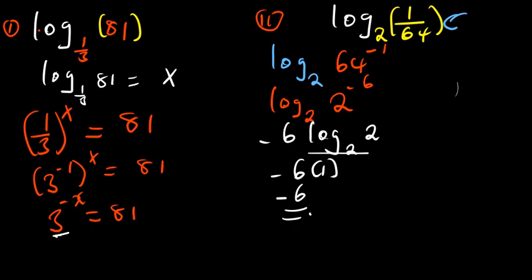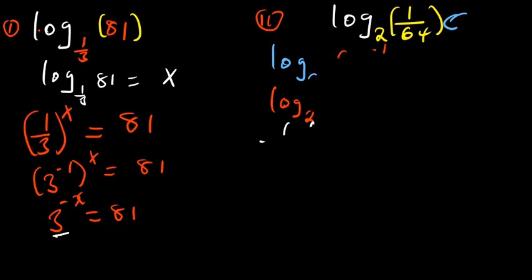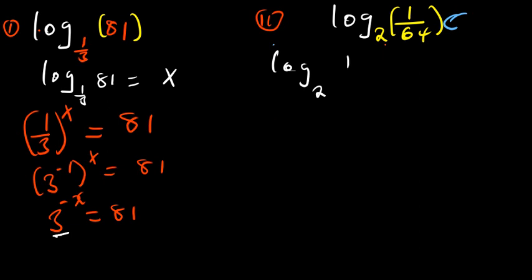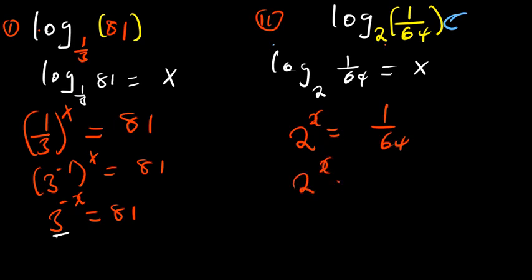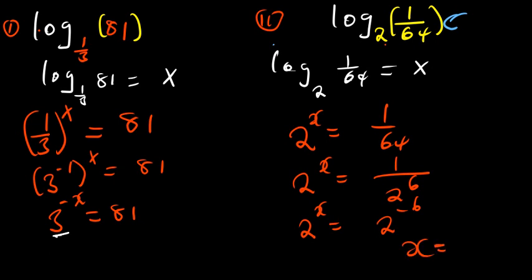In a case where you are having challenges using that concept, you can use the same method as the first question: equate log base 2 of 1 over 64 equal to x and solve for x. Convert from log to exponential: 2 raised to the power x is equal to 1 over 64. Since 64 is 2 to the power 6, that becomes 2 to the power x equals 2 to the power negative 6. The bases are the same, so x equals negative 6.